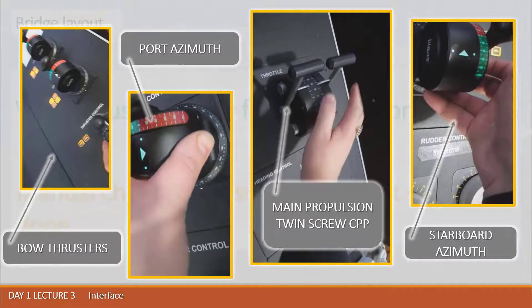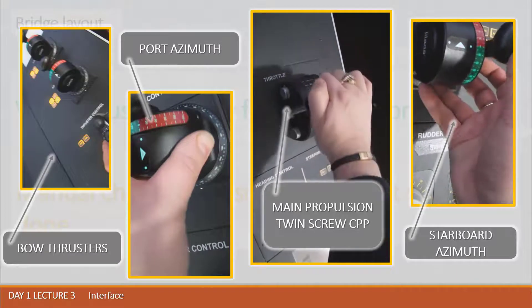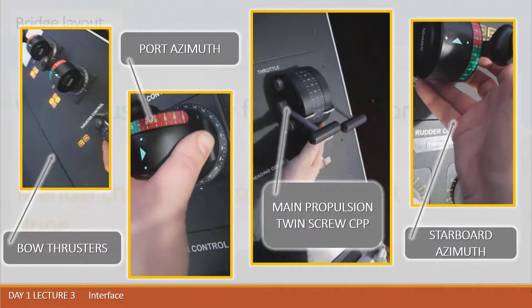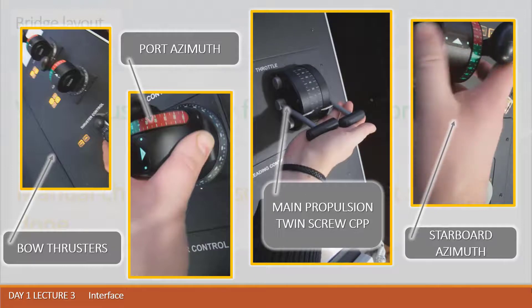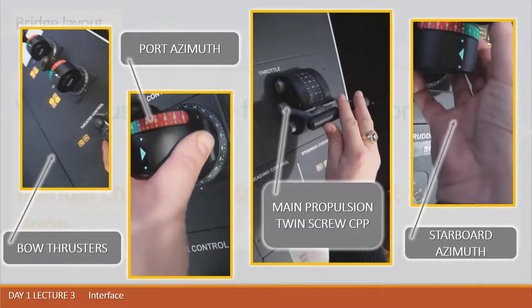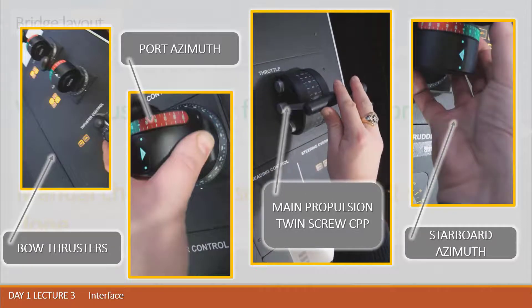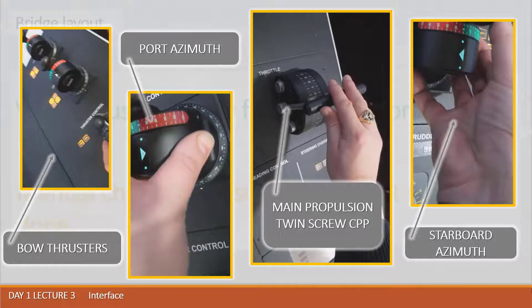You have to be sure that if DP fails, the manual command is available and thrusters are responding to demands from the manual handles of command. This is of utmost importance and that step should never be skipped prior to taking command on DP.